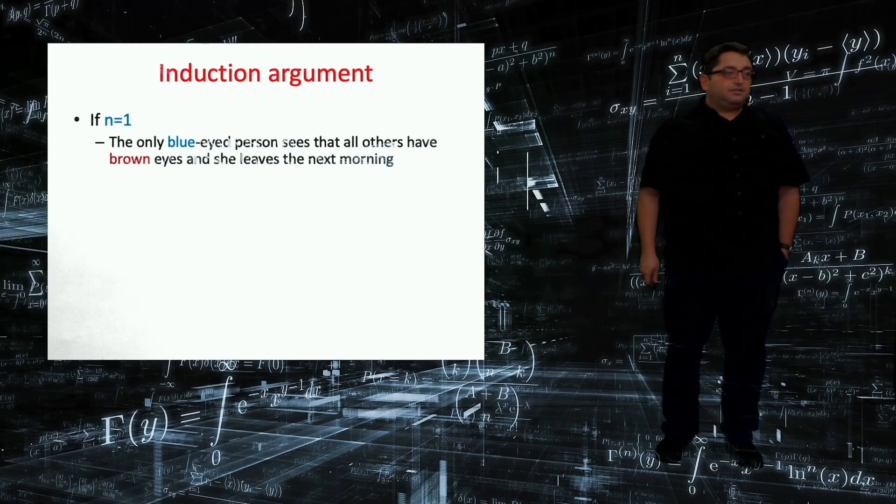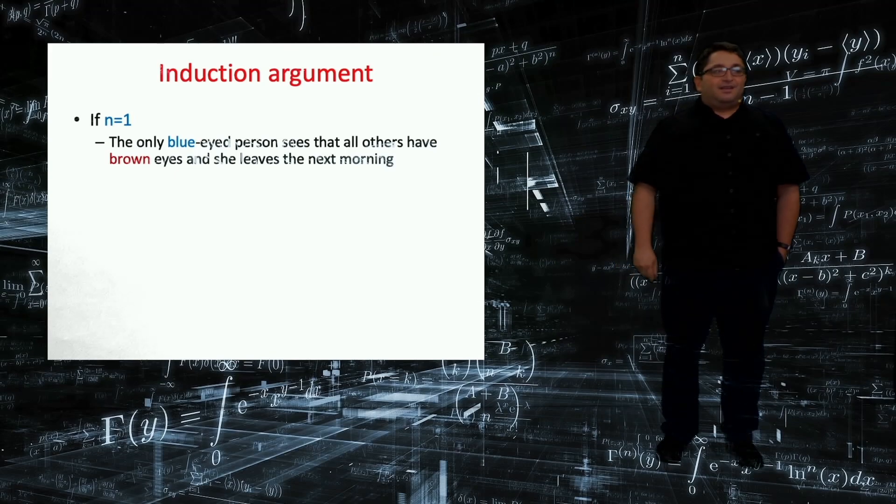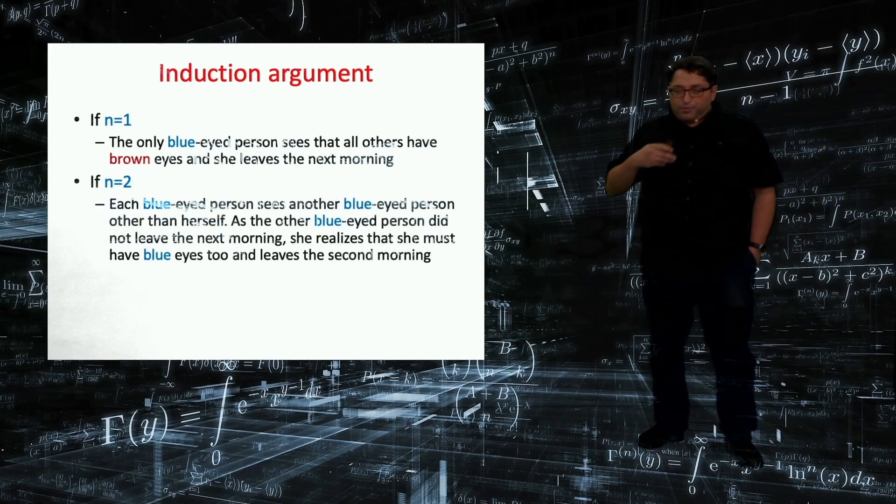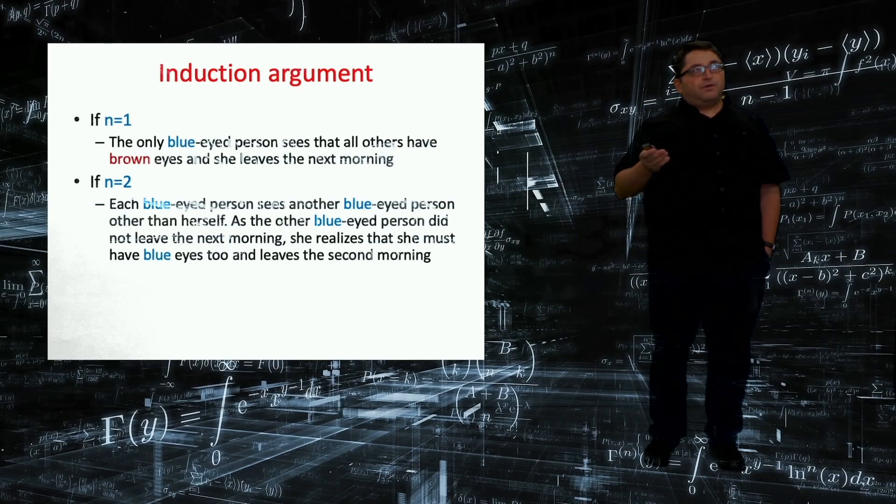So let's see what happens if there are two blue-eyed people. Okay, suppose I have blue eyes, but I don't know it. So other than myself, I see one person having blue eyes and the rest have brown eyes. So I hear the announcement, at least one person has blue eyes.